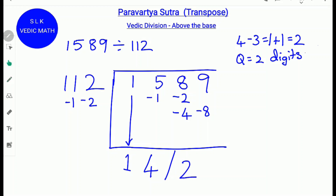Next, do 9 minus 8, which is 1. Write down the 1. So the answer for 1589 divided by 112: the quotient is 14 and the remainder is 21.